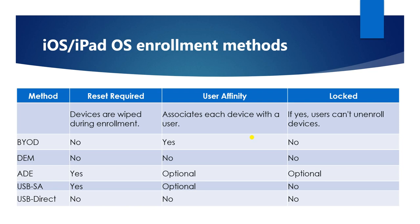The lock feature lets you lock any device through the Intune console — for example if a device is lost, the user has left, or they haven't returned the device to the company. In the BYOD method: reset required — No, user affinity — Yes, and locked — No. You cannot lock the device when handling it through the BYOD method.